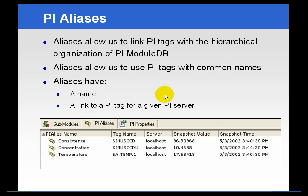Before the module database, you couldn't come into the PI server and say, I have a reactor over there, or a pump, or a turbine — show me all the tags associated with that piece of equipment. You just couldn't do it unless you had some sort of spreadsheet or cheat sheet that listed all the tags associated with that unit. With the PI module database, however, we can drill down to that unit and look at all of the aliases associated with that particular unit.